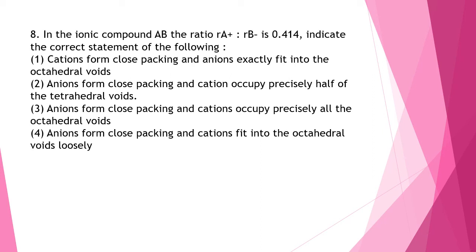So you have two options left. So one is cations from close packing and anions exactly fit into the octahedral voids. But the other option left is anions form close packing and cations occupy precisely the octahedral voids. So the correct answer here is option 3.